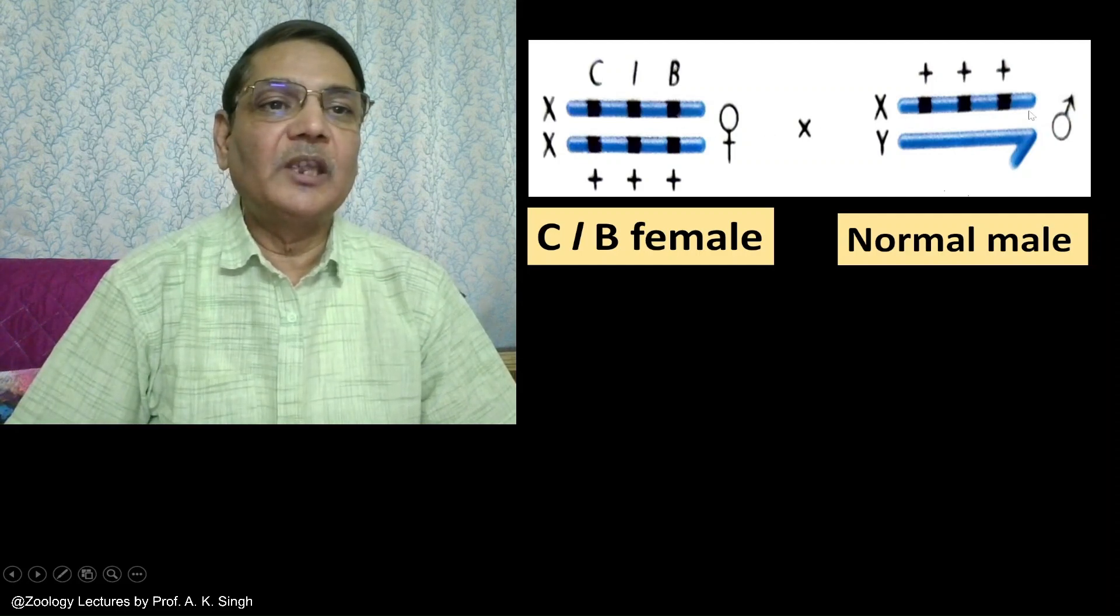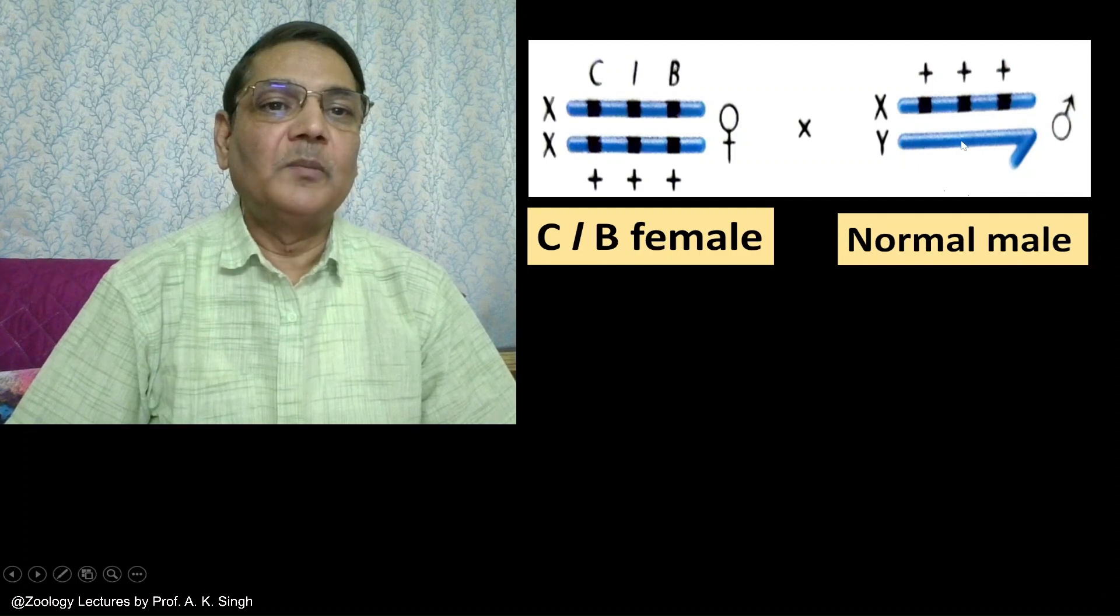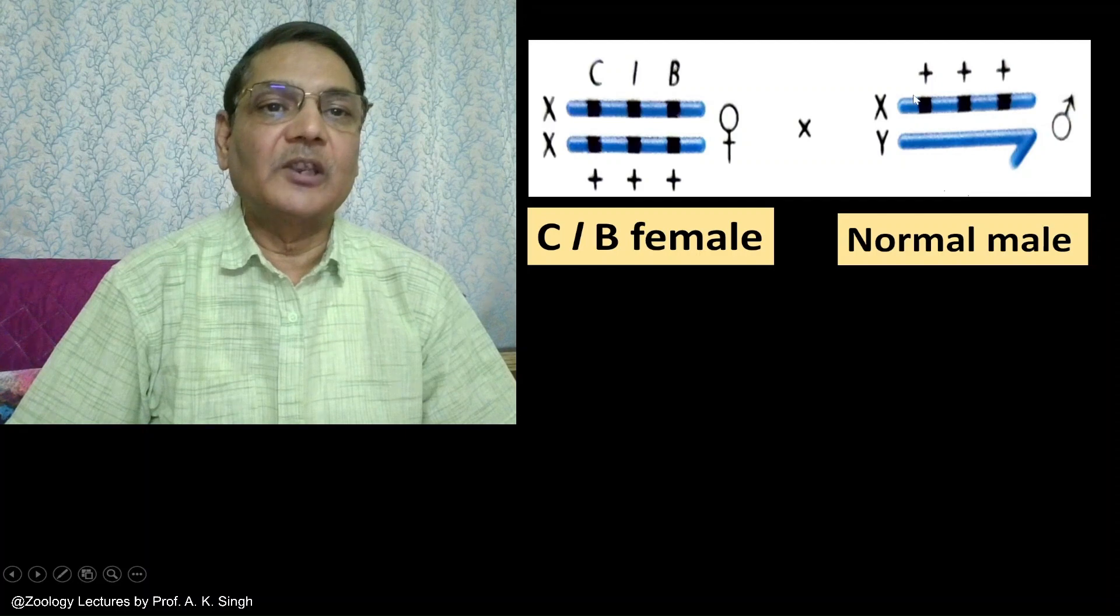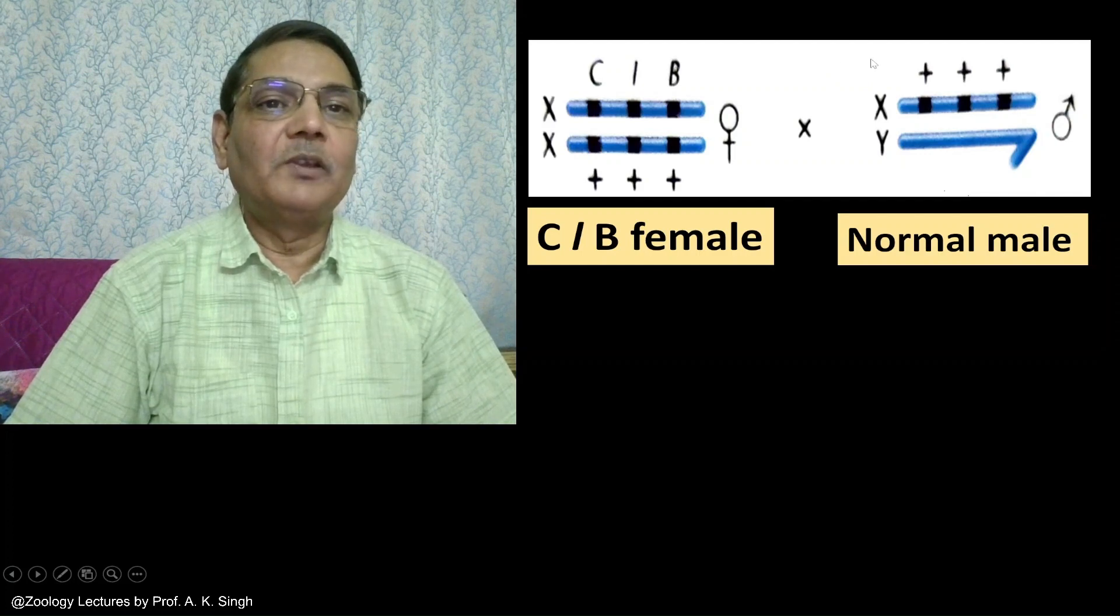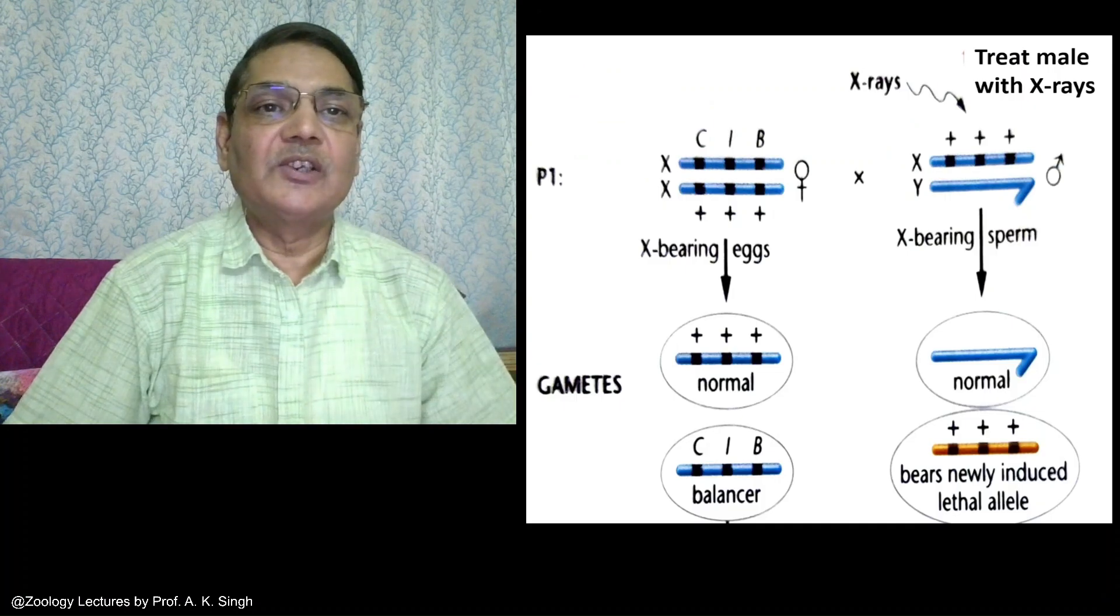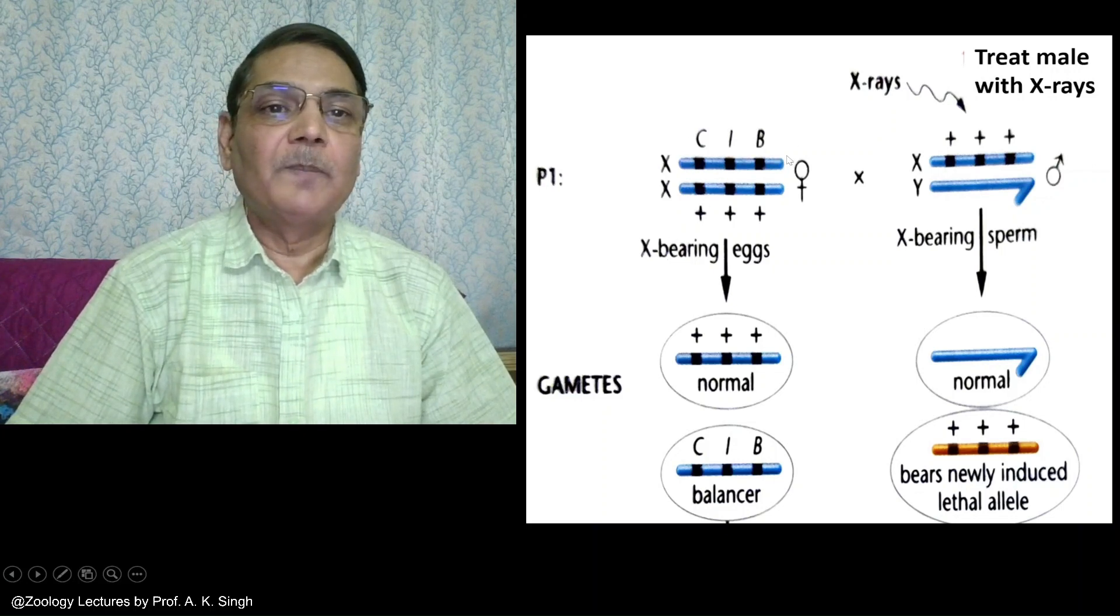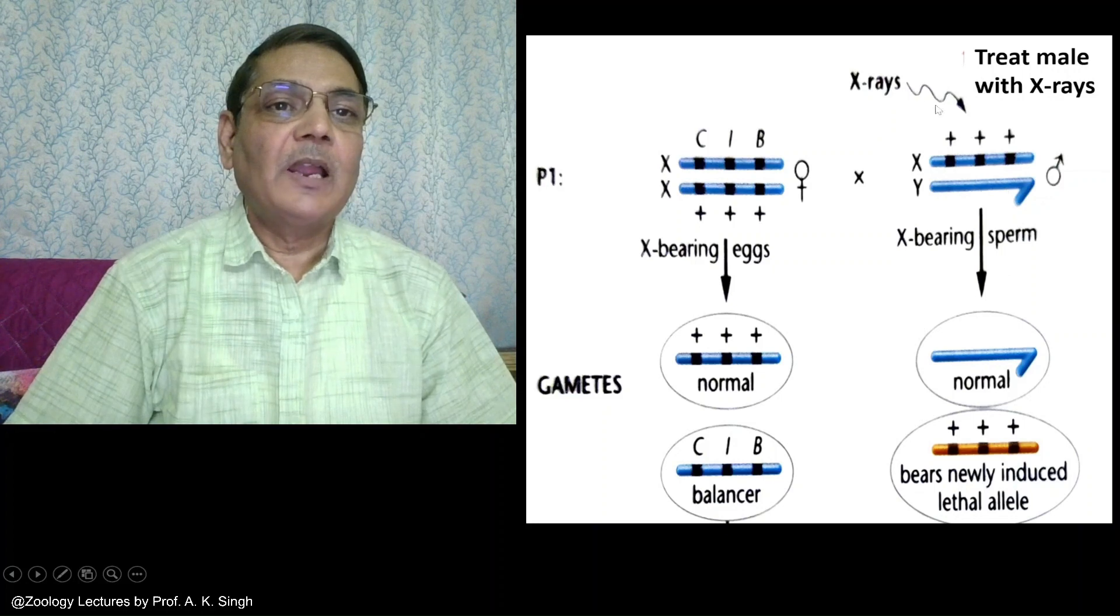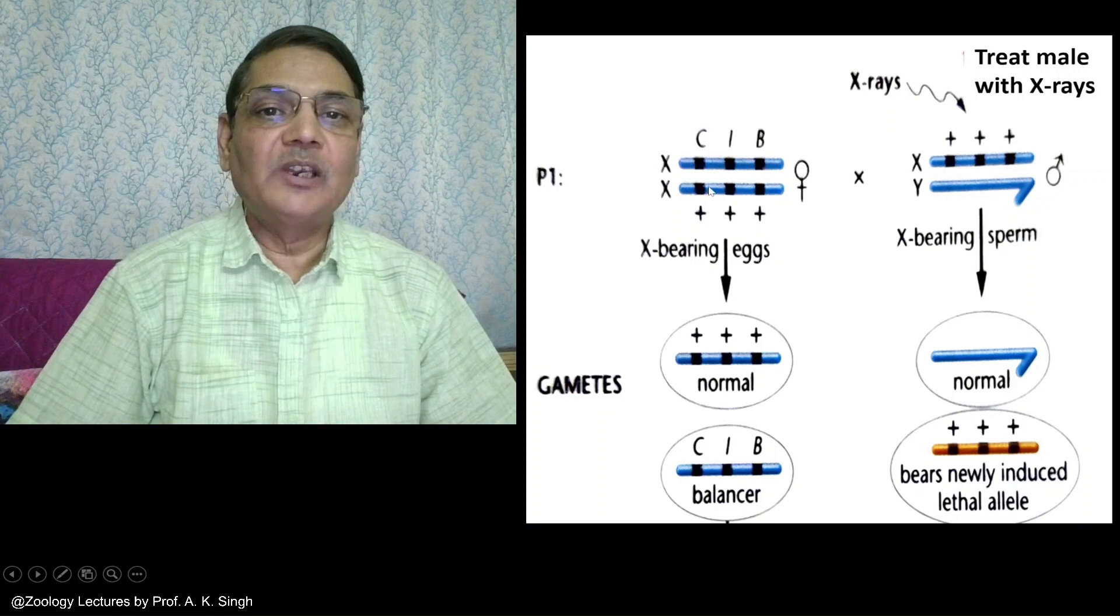We will be crossing this female with a male which will be normal in phenotype. Its one X chromosome will have normal alleles and the other chromosome will be Y. But since we have to see whether X-ray can induce mutation, this male will be exposed to X-rays. A specific dose of X-ray will be given to this male, and we will see whether that X-ray has created mutation or not.